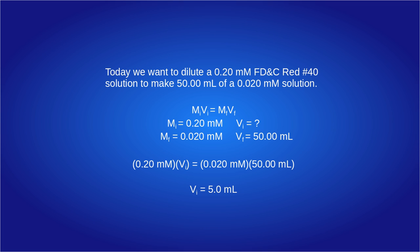The initial molarity is the molarity of the stock solution, 0.20 millimolar. We are solving for the volume of the stock solution needed, which is the initial volume. The final molarity is the molarity of the dilution, 0.020 millimolar. The final volume is the volume of diluted solution we want to make, 50 milliliters. If we solve for the initial volume, we find that we need to use 5 milliliters of our stock solution.